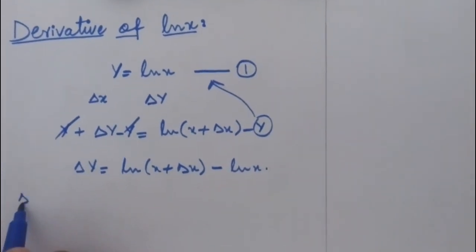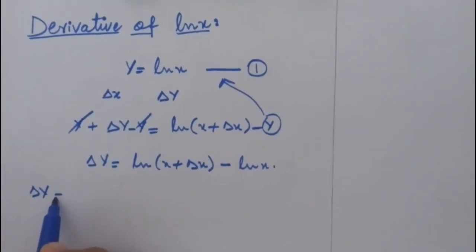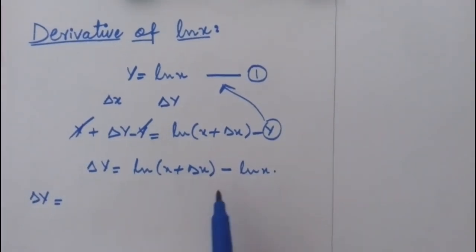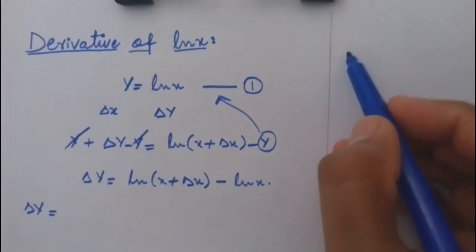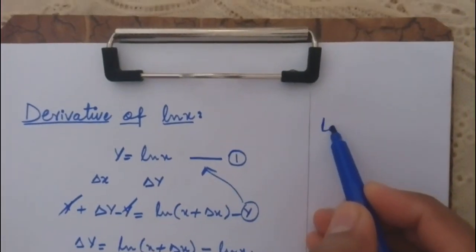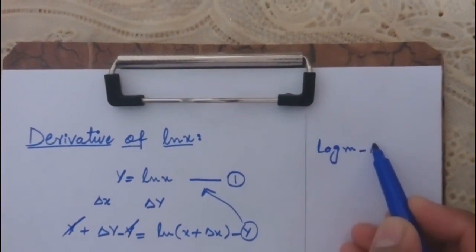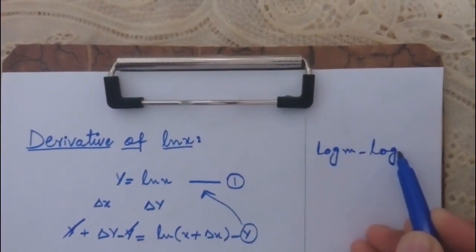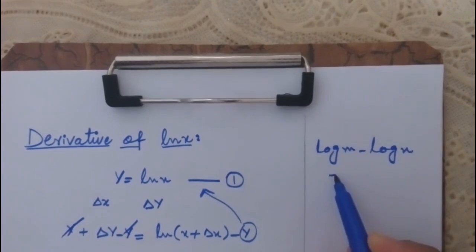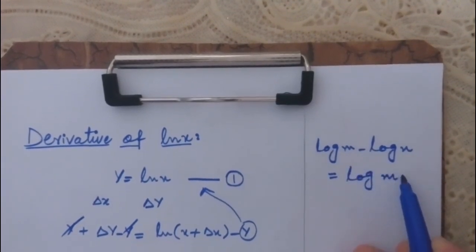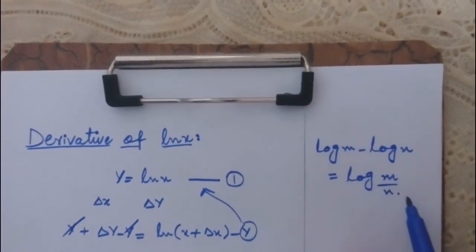So del y is equal to ln(x plus del x) minus ln x. Now from the well-known logarithmic formula: log m minus log n is equal to log(m/n).